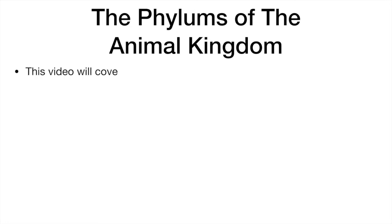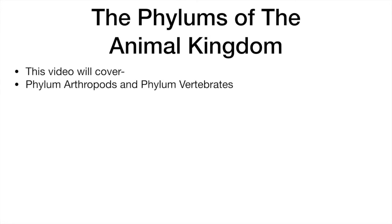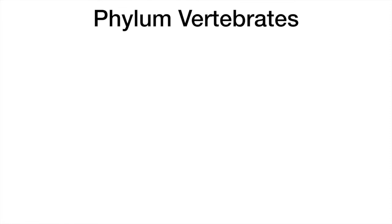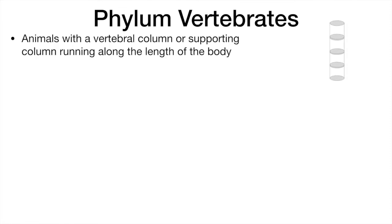Now let's classify animals further, dividing the kingdom into five phylums. Note that this video will only cover the phylum Arthropoda and the phylum Vertebrata. Vertebrates are animals which have a supporting vertebral column running along the length of the body.